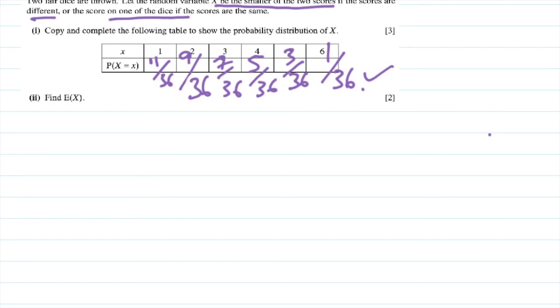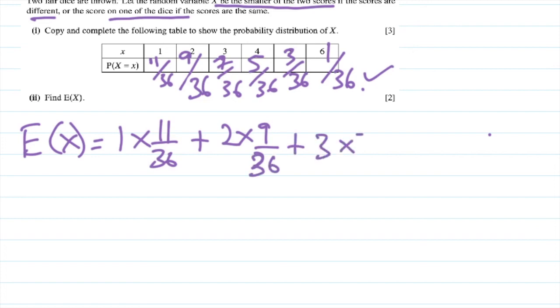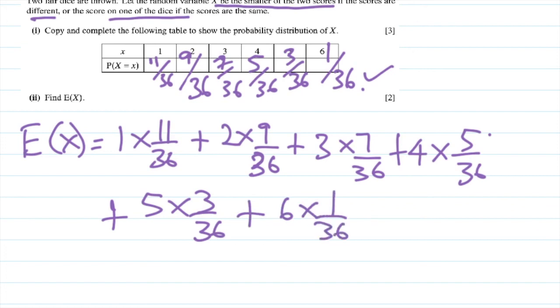So the expected value of X is one times eleven over thirty-six, plus two times nine over thirty-six, plus three times seven over thirty-six, plus four times five over thirty-six, plus five times three over thirty-six, plus six times one over thirty-six.